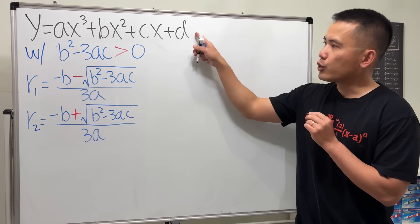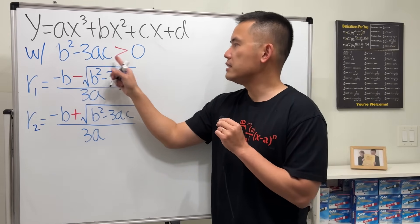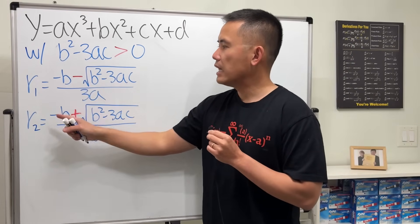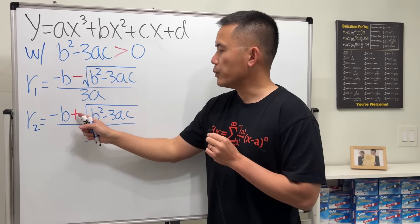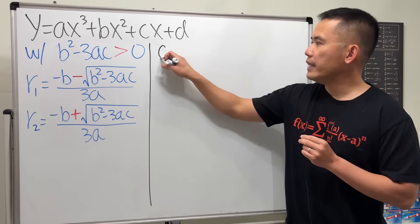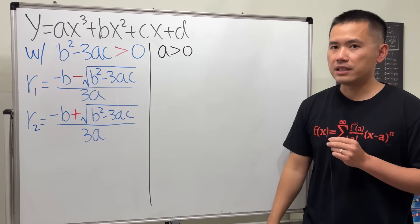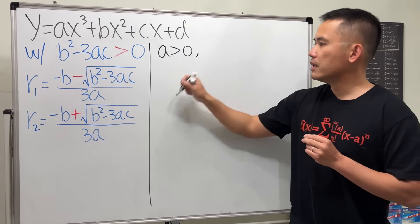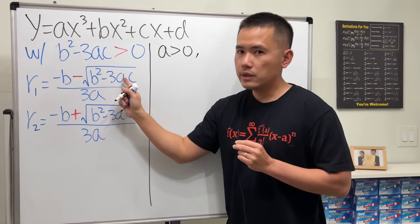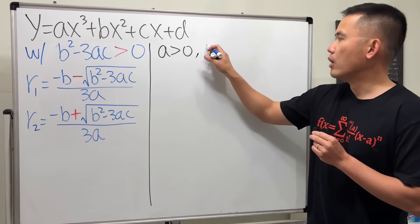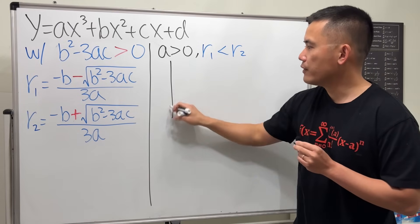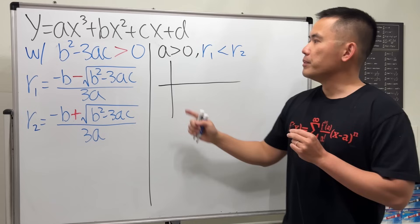So here's the summary. Suppose our cubic function satisfies b squared minus 3ac greater than 0. From the formula, when we subtract the square root part I'll call that r1, and when we add I'll call that r2. We need to break this into cases: a positive versus a negative. When a is positive, the denominators are positive, so subtracting the square root gives a smaller value than adding — meaning r1 is less than r2.